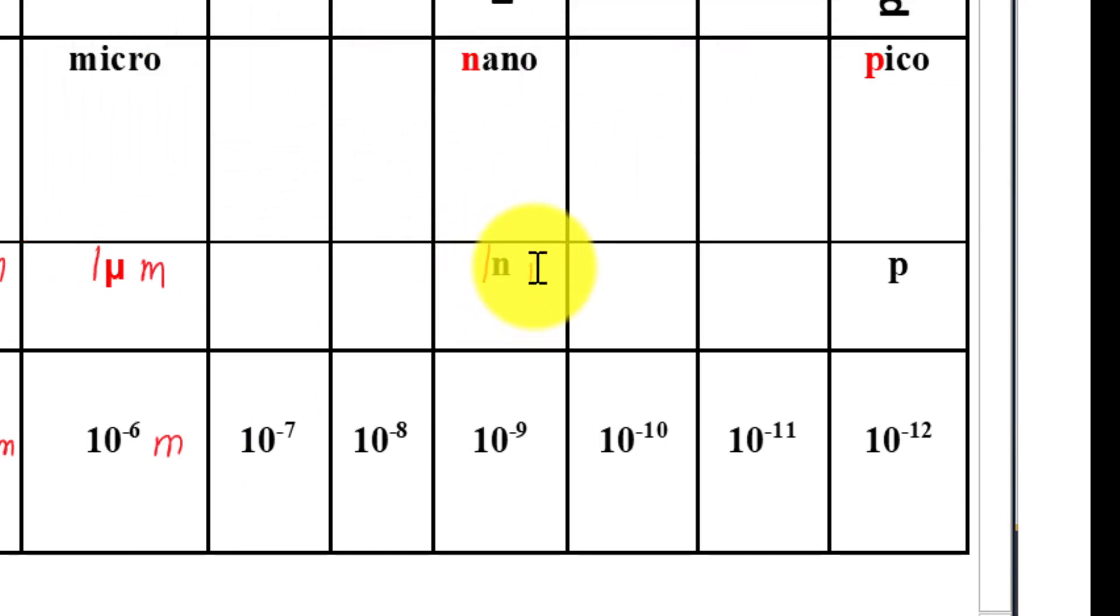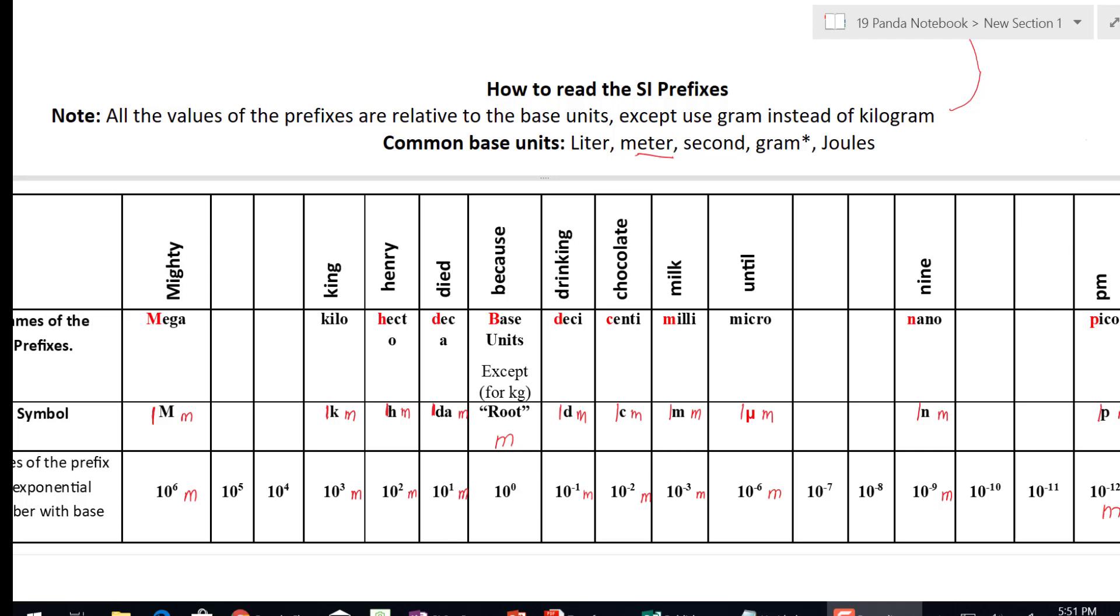Nano: one nanometer equals ten to the negative nine meter. Pico: one picometer equals ten to the negative twelve meter. And this works for grams, seconds, liter, or joule, or any SI unit.